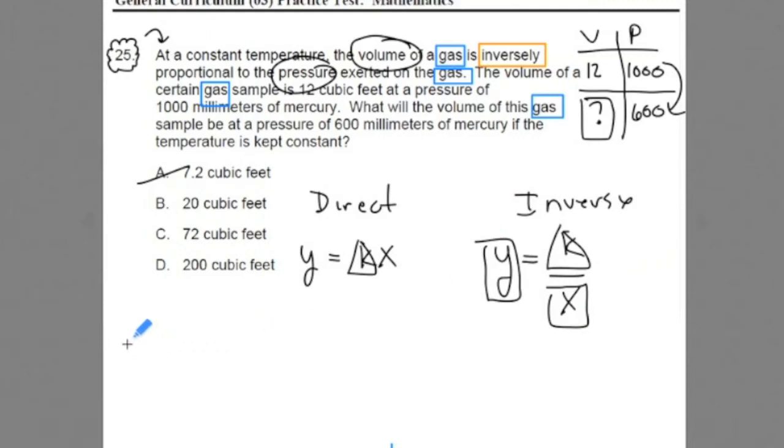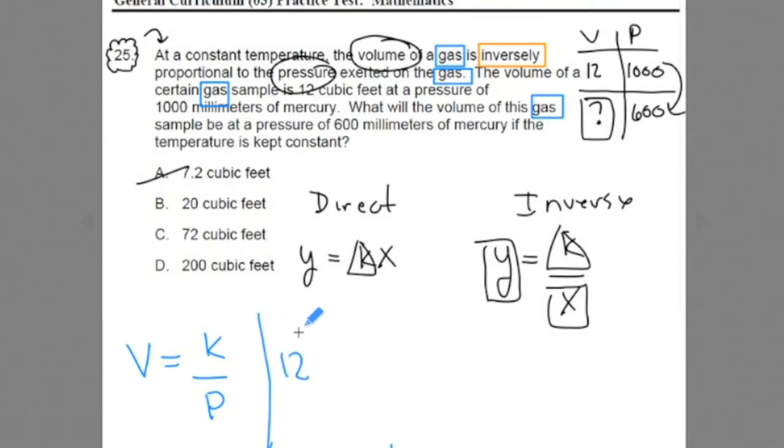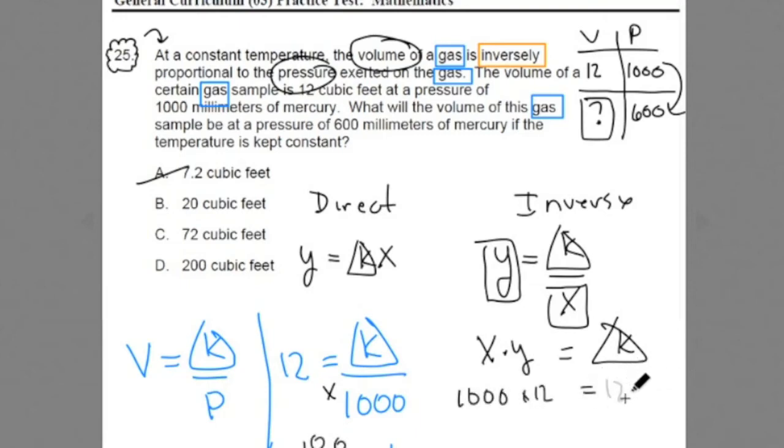For example, in this problem, we know that volume is inversely proportional to air pressure. And we're told that when volume is 12 cubic feet, it's going to be k over 1,000 millimeters of air pressure. Now if we want to find out what k is, in inverse relationships, this constant is the product of x times y. So in this one here, when we take our x times the y, we do 1,000 times 12. We get a constant of proportionality of 12,000.